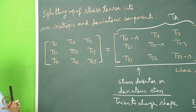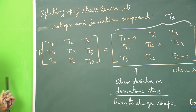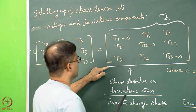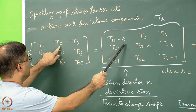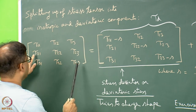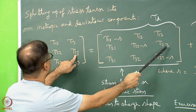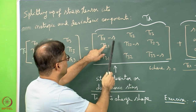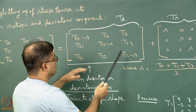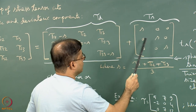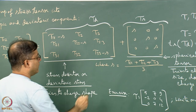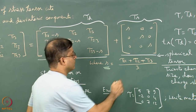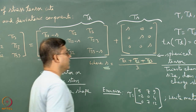We have a second rank tensor tau with nine elements. It can be written as the sum of two tensors. The first has diagonal elements tau11 minus S, tau22 minus S, and tau33 minus S, with off-diagonal elements intact. To balance this, we add a second tensor with S on the diagonal: S, 0, 0 / 0, S, 0 / 0, 0, S. Here S is defined as (tau11 + tau22 + tau33) / 3.